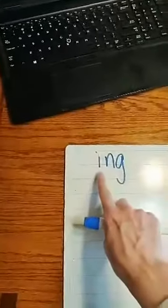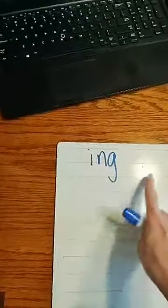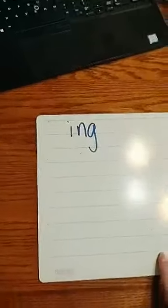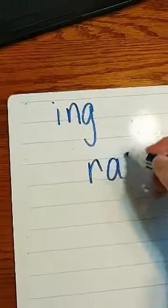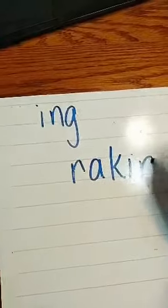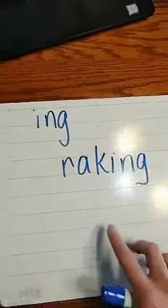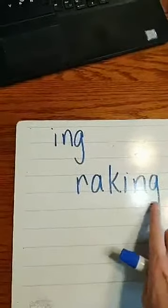Okay, so now the other one we have, we said when we add ing to the end. I-N-G. Ing. Okay? So we wouldn't say this I-N-G. We would say ing, just like it's one sound together. Okay? So for example, I'll just use my word from over on the other side. Raking. Raking.